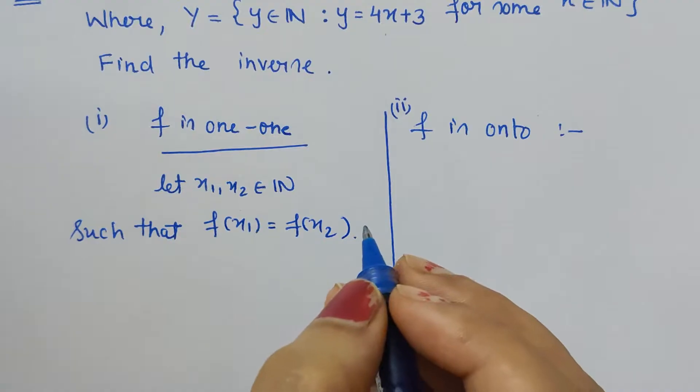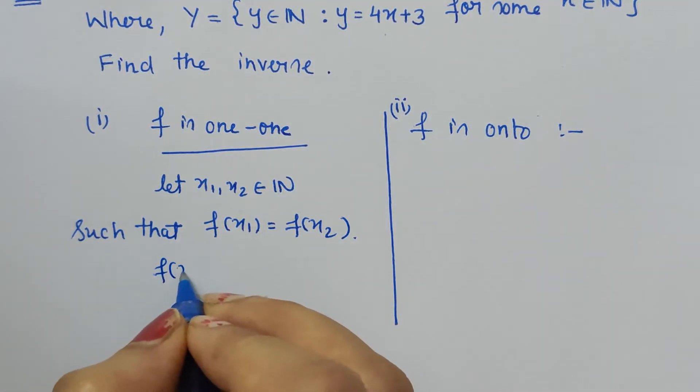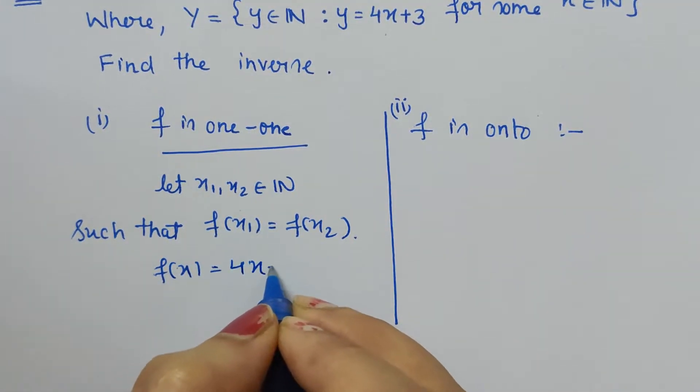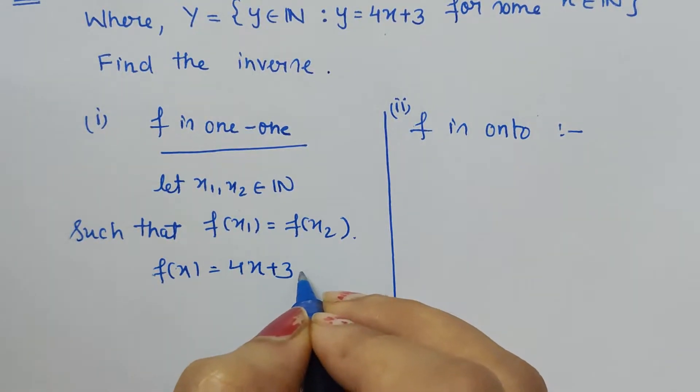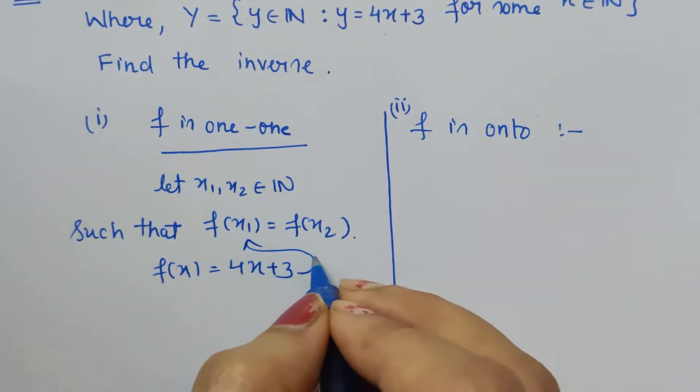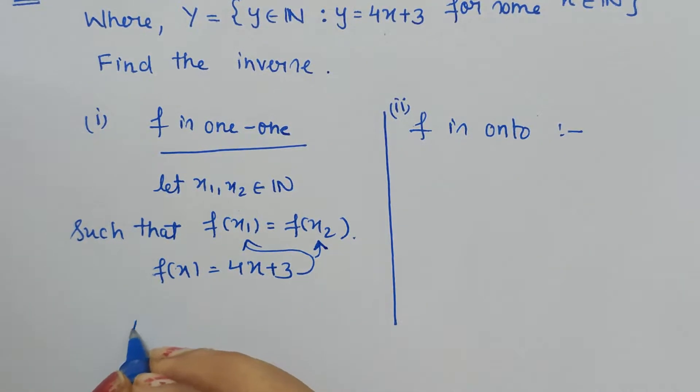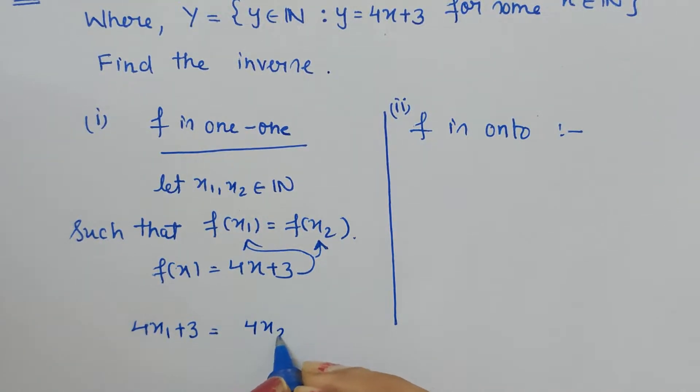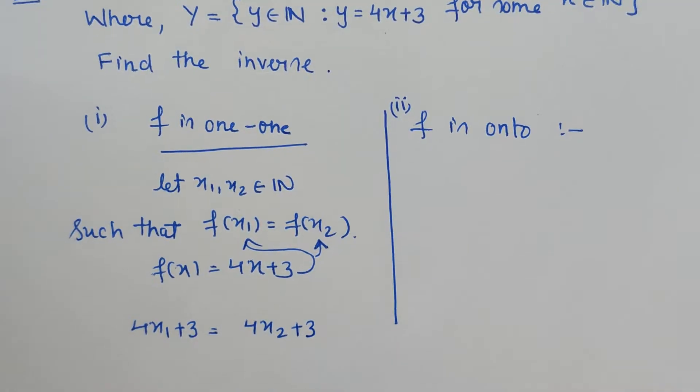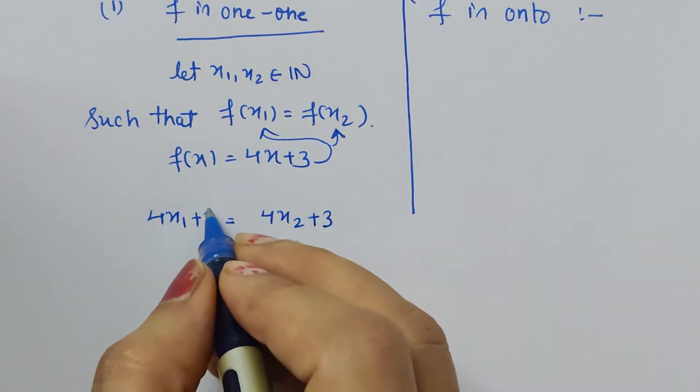So by putting this in, what do we get? 4x₁ plus 3 is equal to 4x₂ plus 3. Now when we shift 3 to that side it gets minus 3, so 4x₁ is equal to 4x₂ because these two get cancelled, minus 3 plus 3.